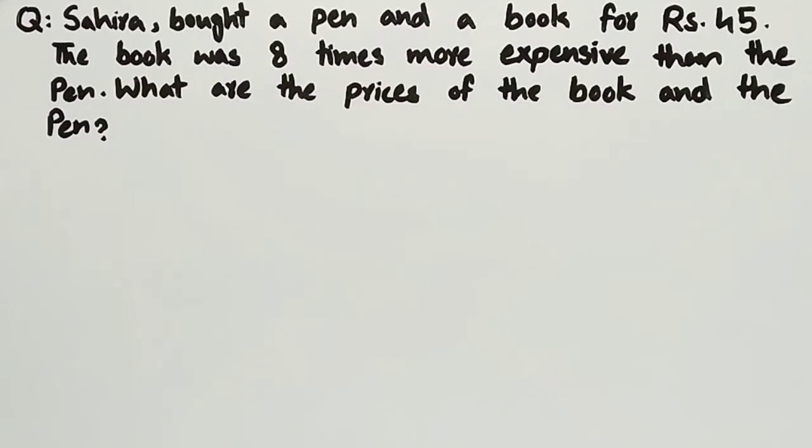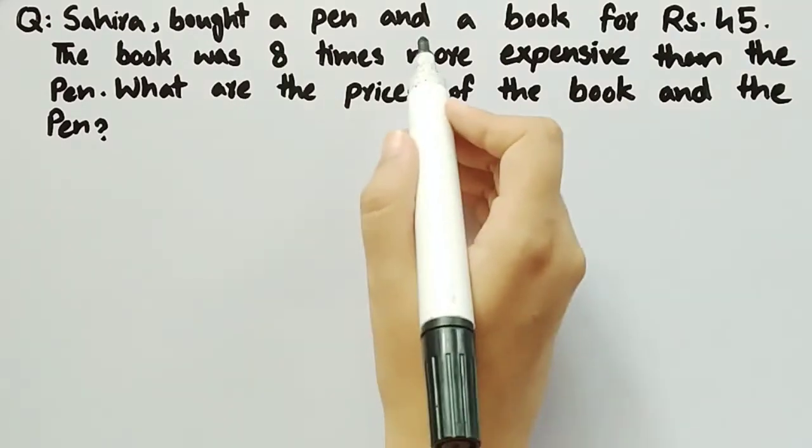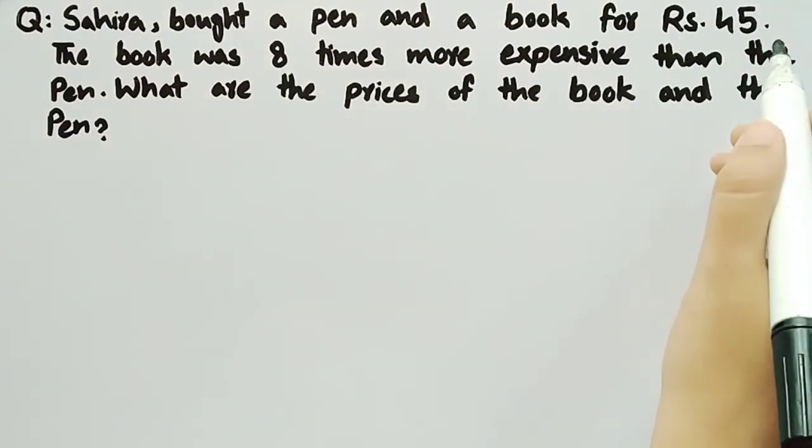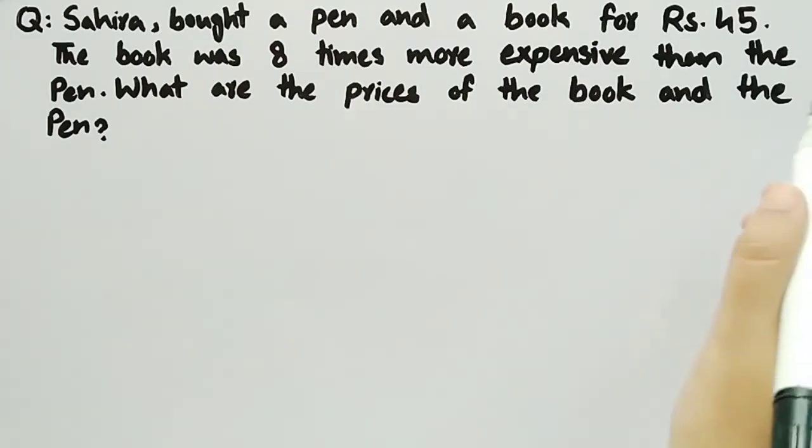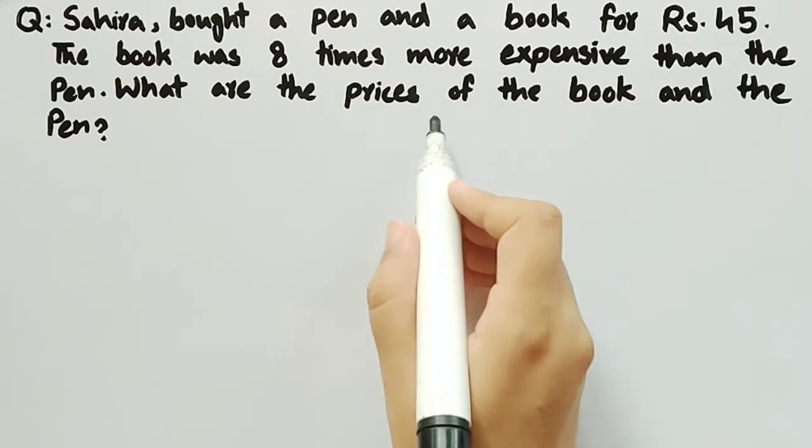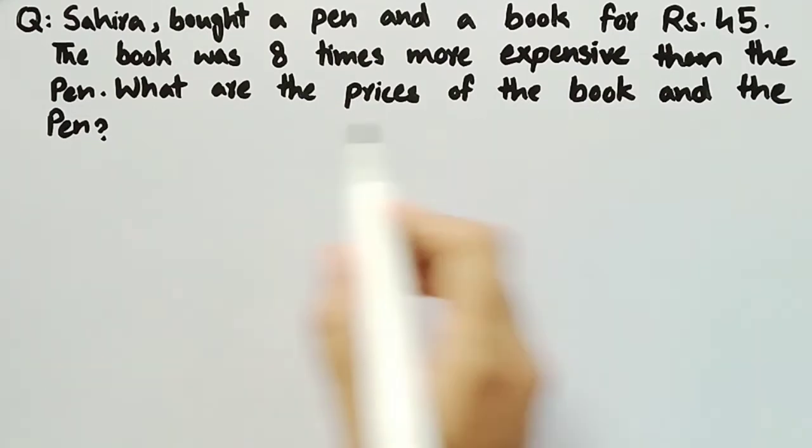In this video, we will discuss a world problem in which it is stated that Sahira bought a pen and a book for Rs. 45. The book was 8 times more expensive than the pen. What are the prices of the book and the pen?